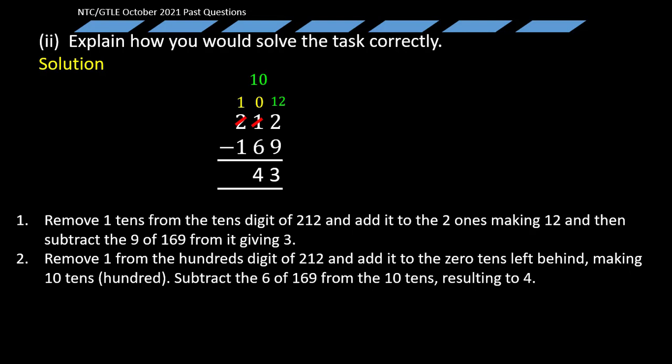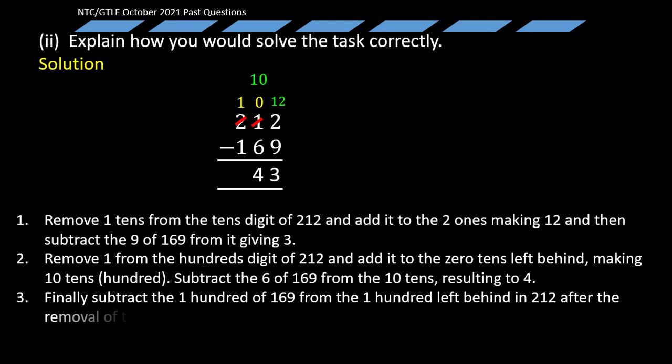Now for the third step, you finally subtract the one hundred of 169 from the one hundred left behind in 212 after the removal of the one. This gives zero. What do we mean by that? Because one is left here and one is left down here, so one minus one simply gives us zero. Now the final answer is then 43 as illustrated above. So this is our presentation and I hope that you got everything right.